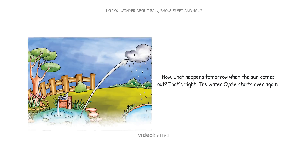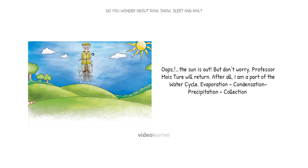Now, what happens tomorrow when the sun comes out? That's right — the water cycle starts over again. Oops, the sun is out. But don't worry, Professor Moisture's tour will return. After all, I am a part of the water cycle. Evaporation, condensation, precipitation, collection.